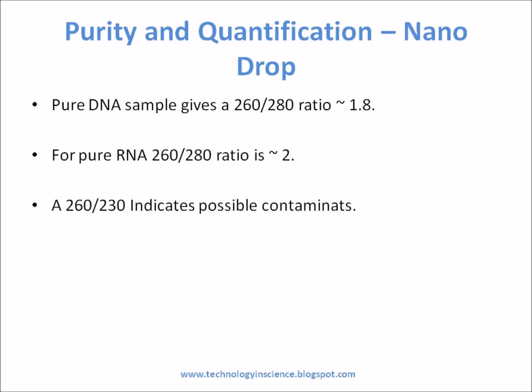The 260/280 ratio tells us the purity of the analyzed sample. A pure DNA sample gives a 260/280 ratio of 1.8, and for pure RNA the 260/280 ratio is 2.0. Absorbance at 230 nm is considered the result of other contamination, so the A260/A230 ratio is also frequently calculated. The 260/230 values for pure nucleic acid are often higher than the respective 260/280 values, with expected 260/230 values commonly in the range of 2.0 to 2.2.